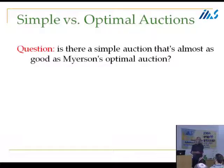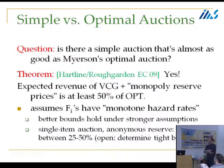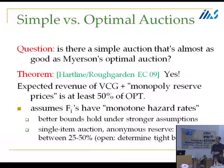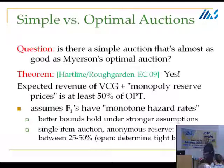The feasible subsets are those where selected bidders' bundles are pairwise disjoint, since each good can only be sold once. Myerson's theory applies perfectly: transform bids into virtual bids, find the allocation maximizing virtual welfare, and charge the unique incentive-compatible prices. But Myerson's optimal auction is hard to interpret even for a single item — and certainly much more so for combinatorial auctions with single-minded bidders. So is there something simpler that's almost as good?